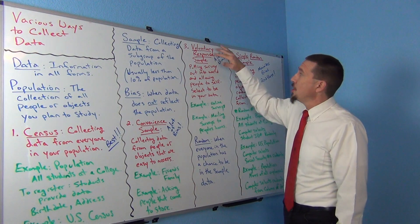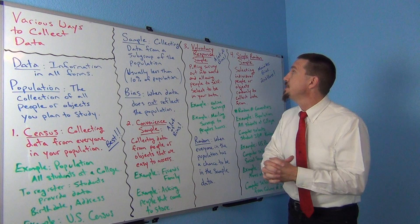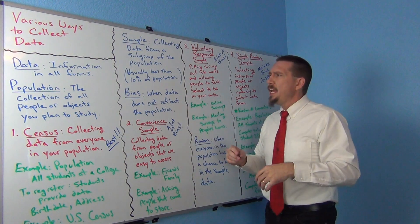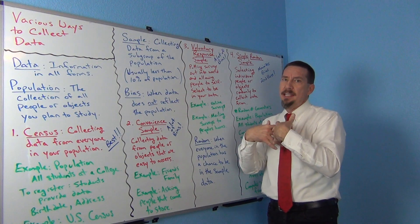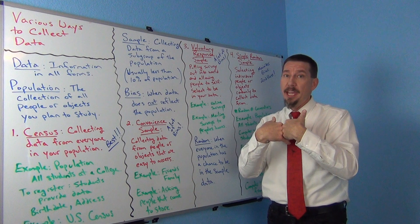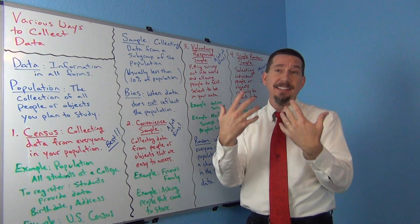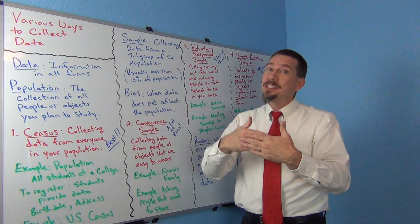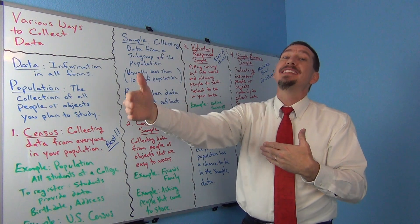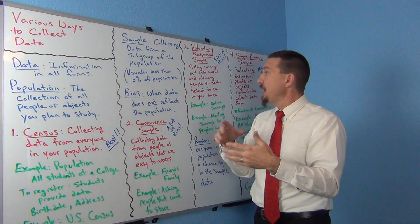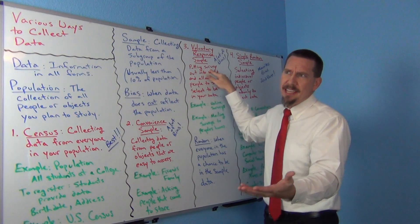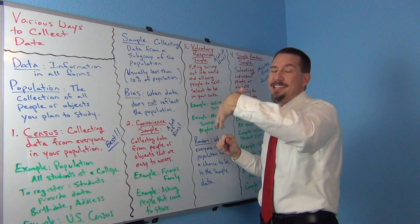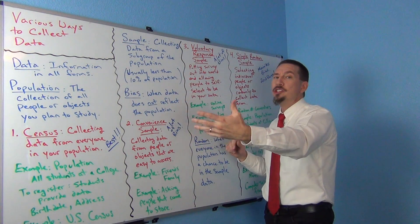Another sample type that has problems is called the voluntary response sample — and this might be the most popular type. This is where you put a survey out into the world and allow people to self-select into your data set. In other words, you didn't choose them — they chose you. As a data scientist, we want to make sure that we are selecting the person, not letting the person self-select themselves into our data set.